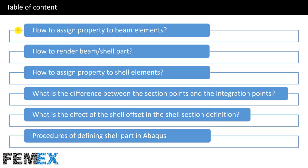This is the table of contents. I will talk about how to assign property to beam elements, how to render beam shell parts, how to assign property to shell elements, what is the difference between the section points and the integration points, what is the effect of the shell offset in the shell section definition, and finally procedures of defining shell parts in Abaqus.